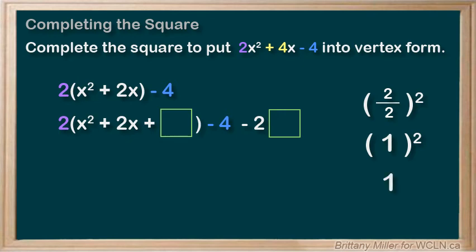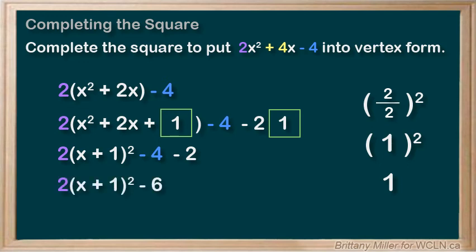Let's put that 1 in our boxes. So the 2 stays out front, and then we have x plus 1 squared, and then minus 4 minus 2 equals minus 6, making our final answer 2 times x plus 1 squared minus 6.